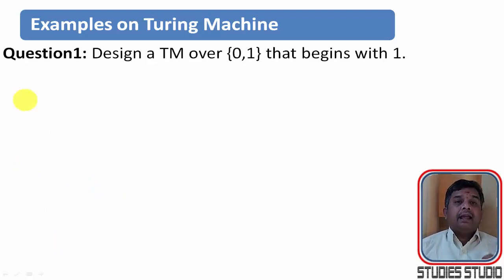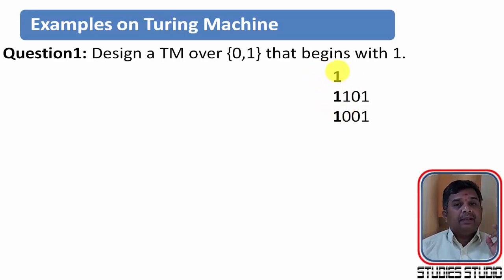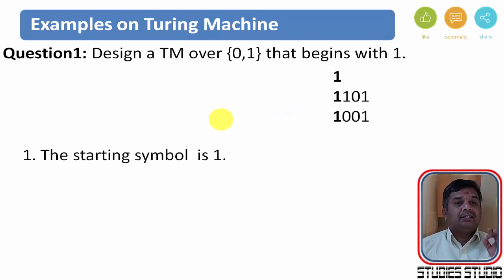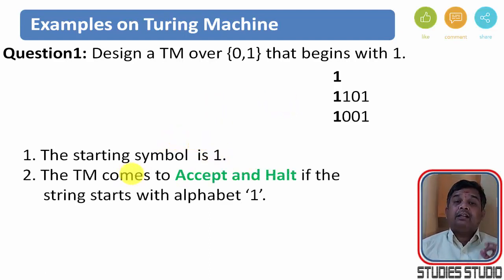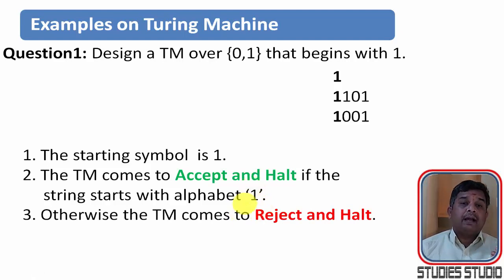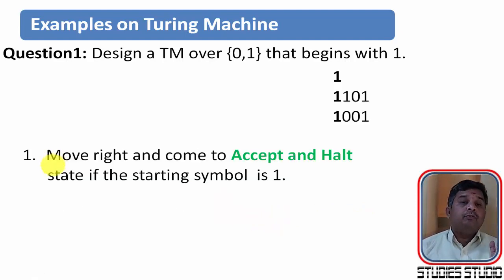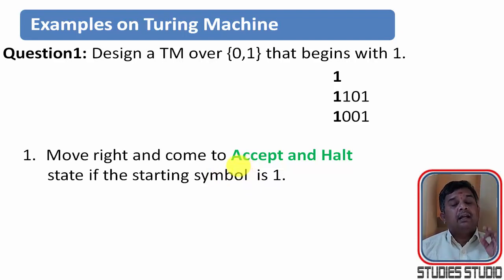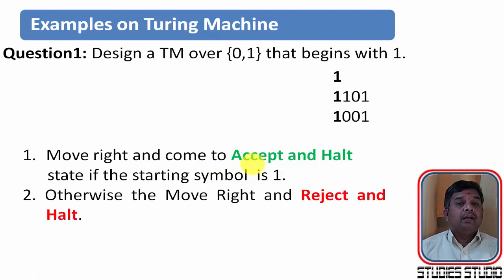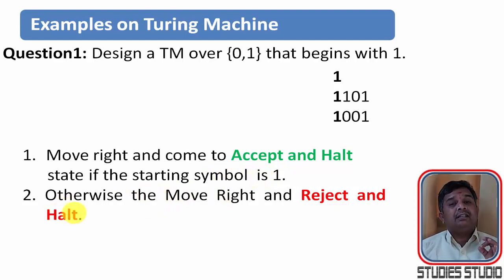We are going to design a Turing Machine with input symbols 0 and 1 that will begin with 1. The strings that begin with 1 will look like this — it means after 1, anything of 0 and 1 may come till a blank comes. The starting symbol is supposed to be 1, and the Turing Machine comes to accept and halt state if the starting symbol is 1, and otherwise it should come to reject and halt. We need to move the read-write head to the right if the first symbol is 1 and go to the accept state and halt there. If the first symbol is not 1, then we must move right and come to a state that is halt and reject.